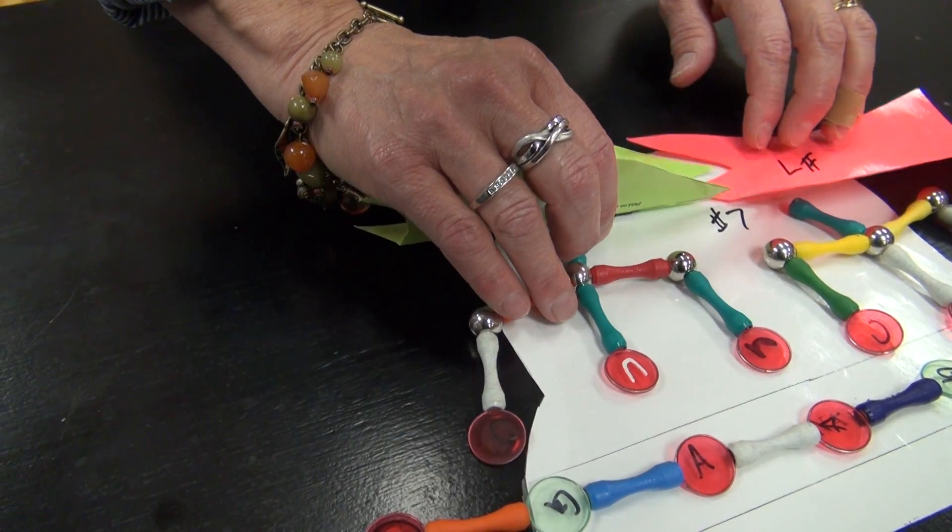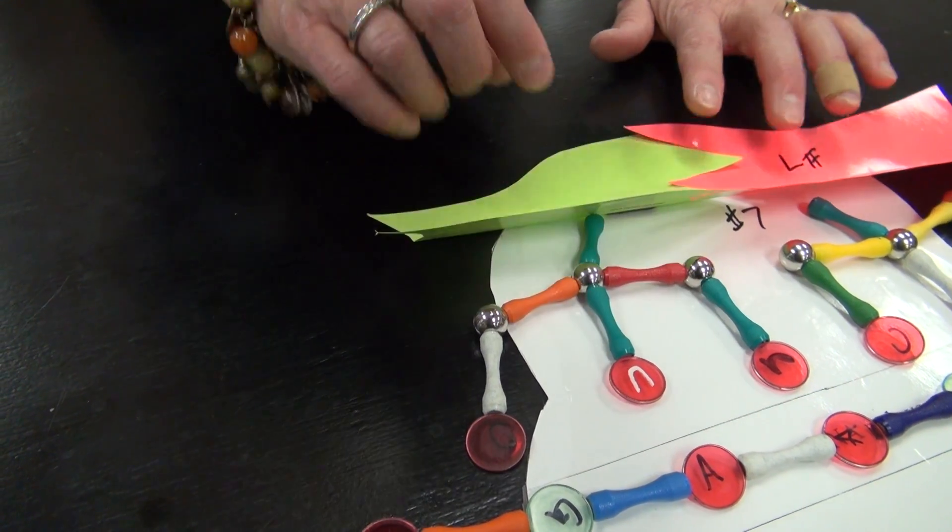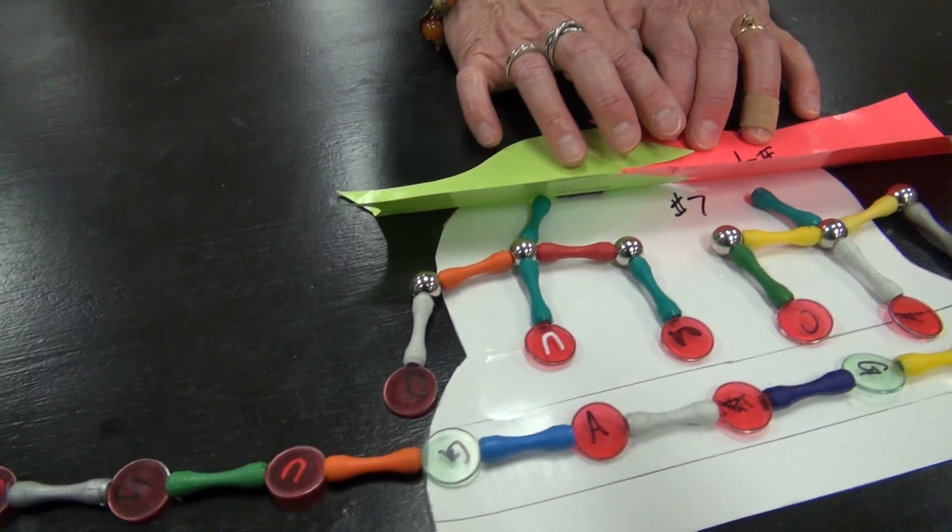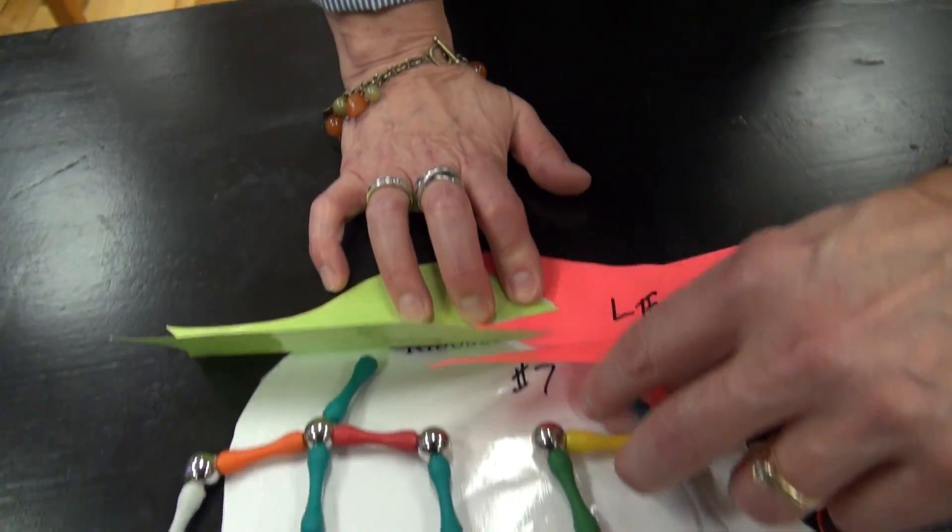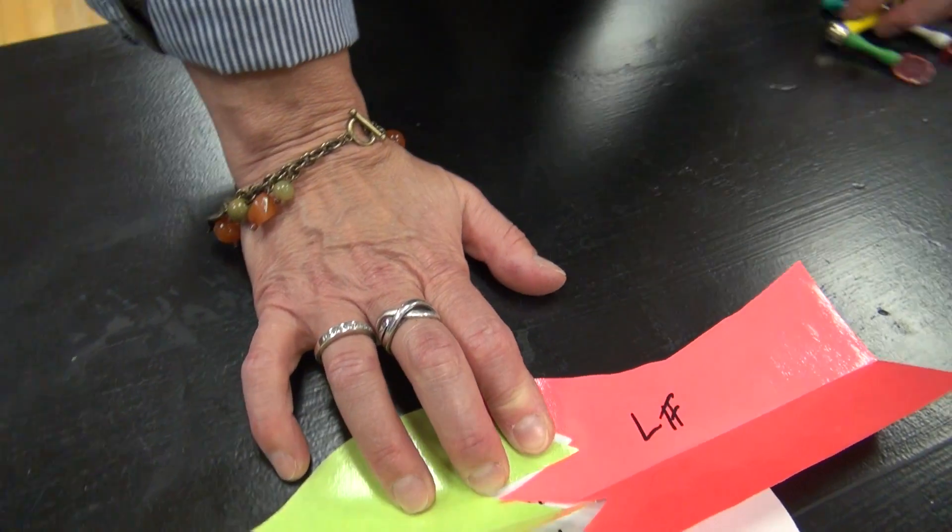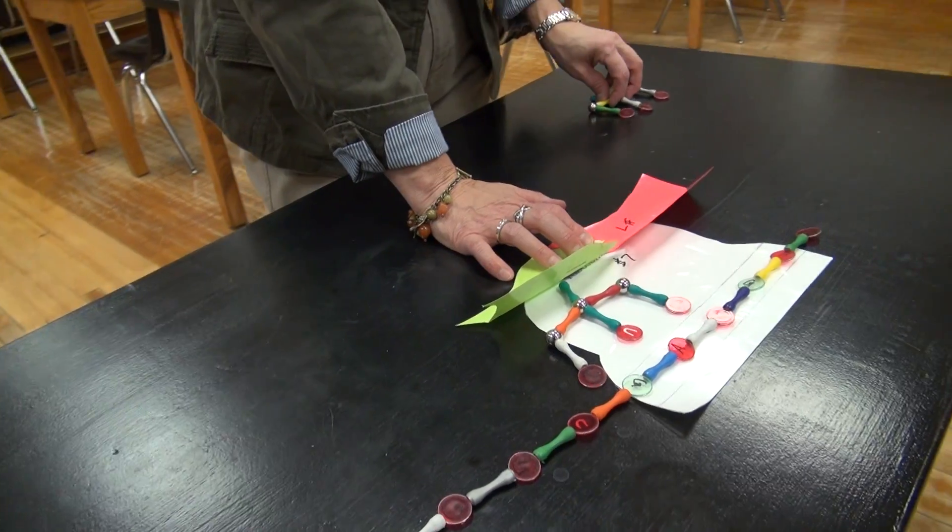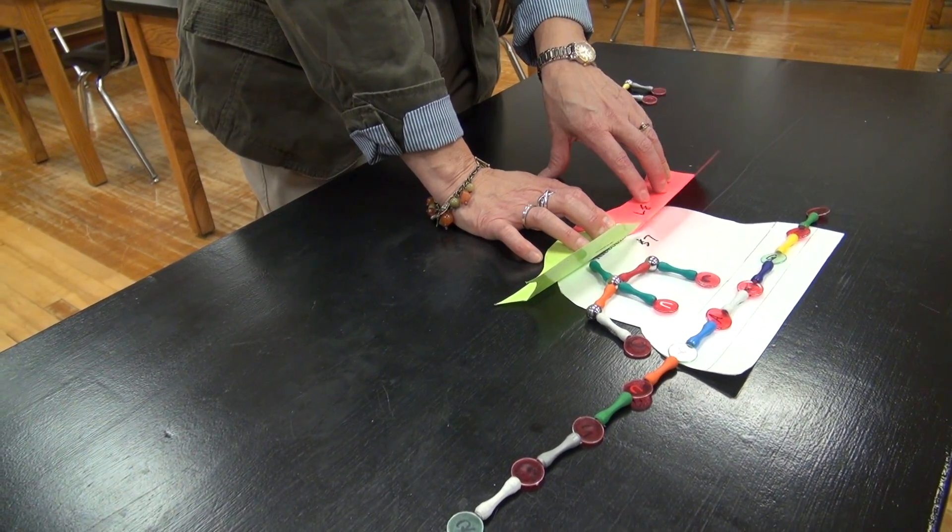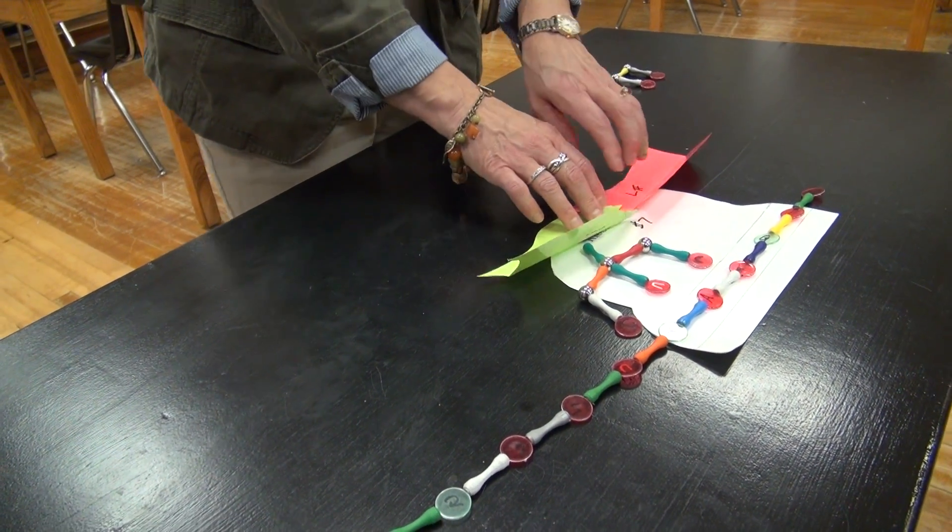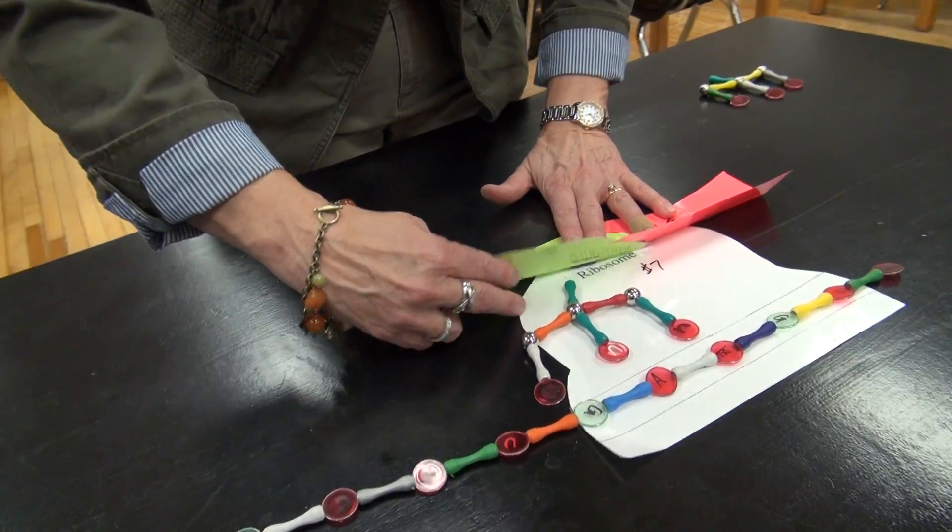It matches up with the mRNA codons. When these two proteins link together, it releases the first tRNA to go and pick up another protein. This tRNA is specific to this protein. Then the process continues.